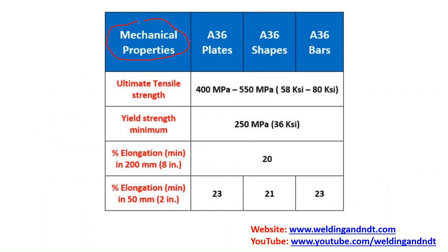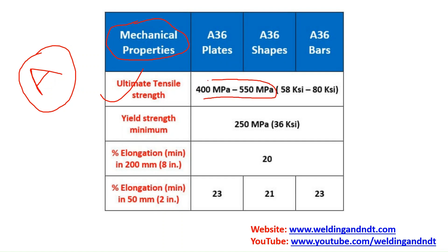The mechanical and chemical properties of any material can be found in ASME Section 2 Part A, and that is where I have taken these properties from. The mechanical properties are as follows: the ultimate tensile strength (UTS) of SA36 is between 400 MPa to 550 MPa, or 58 ksi to 80 ksi. KSI stands for kilo pounds per square inch, and MPa stands for megapascal.